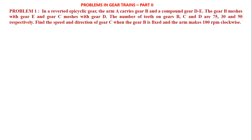In a reverted epicyclic gear, the arm A carries gear B and a compound gear DE. Gear B meshes with gear E and gear C meshes with gear D. The number of teeth on gears B, C and D are 75, 30 and 90 respectively. Find the speed and direction of gear C when gear B is fixed and the arm makes 100 RPM clockwise.